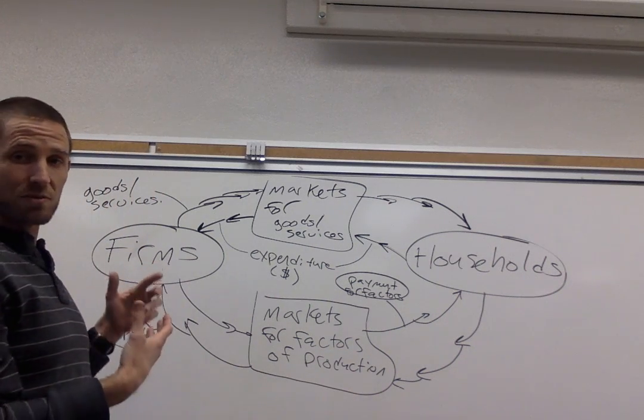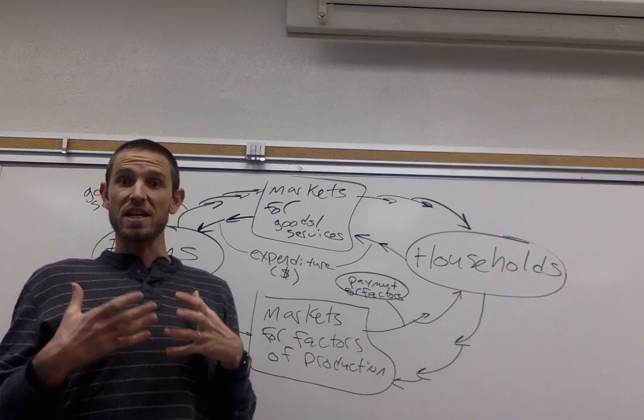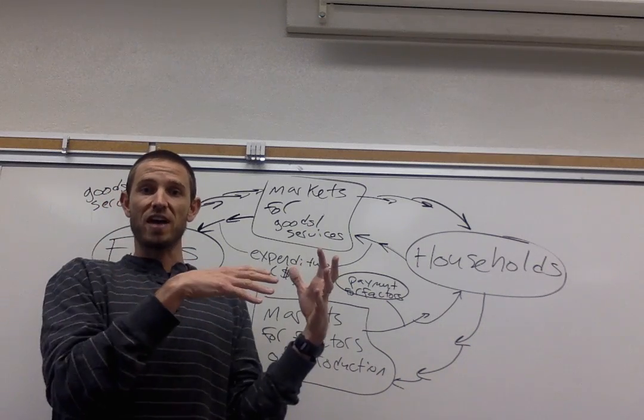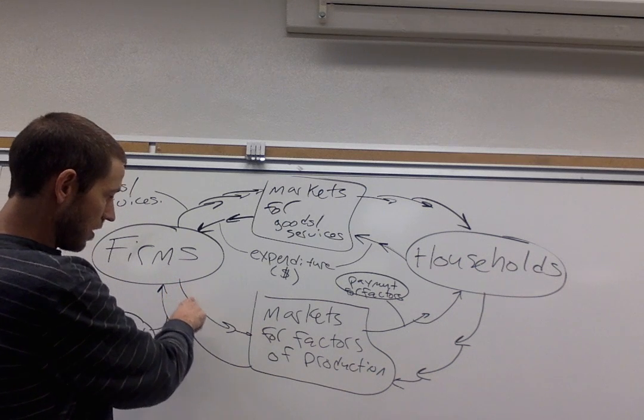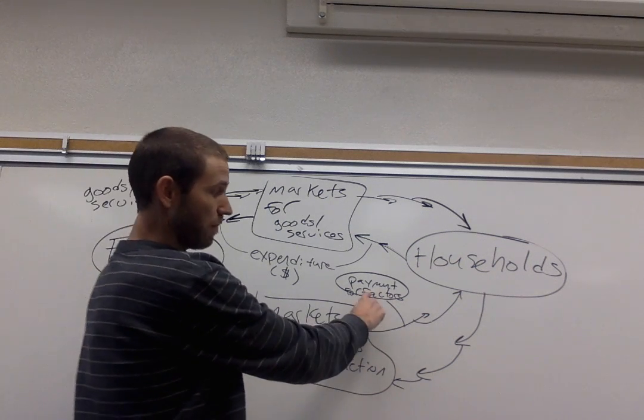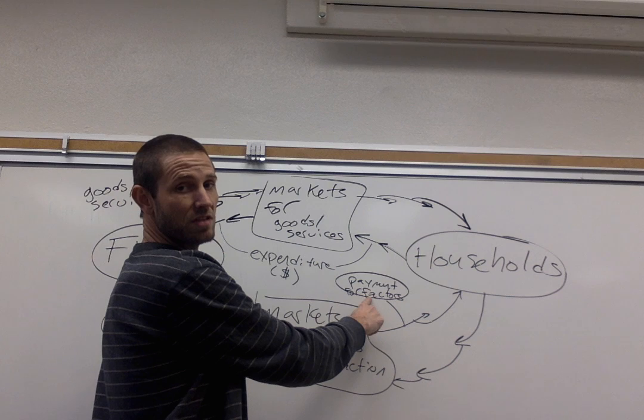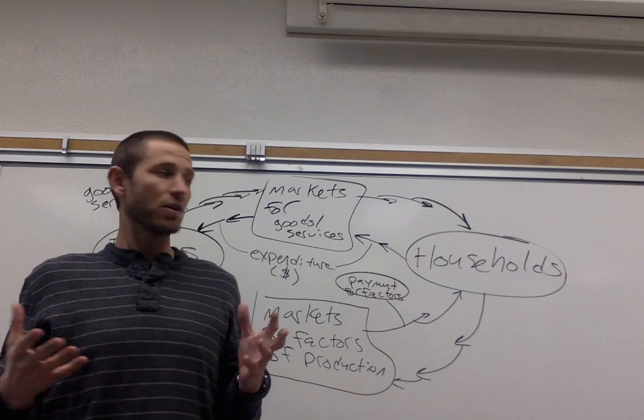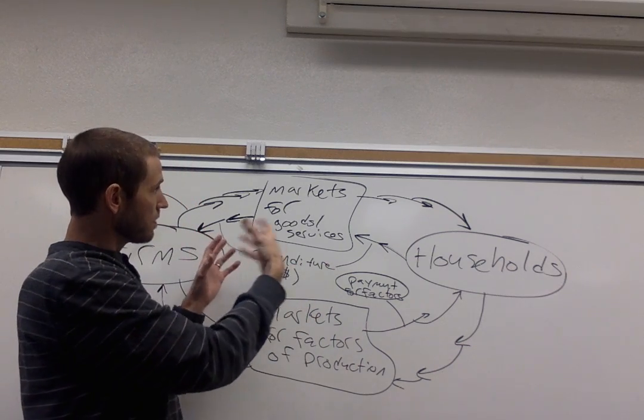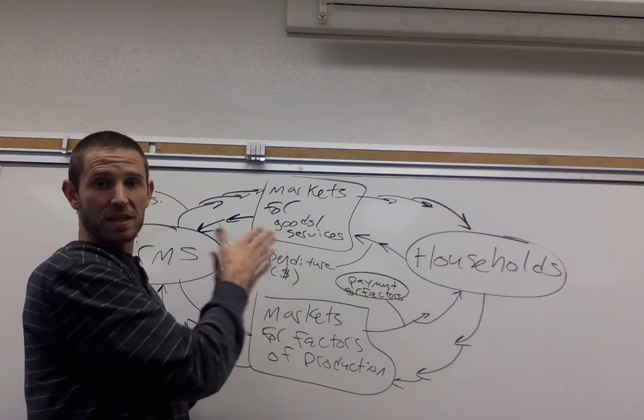As we're selling these resources to firms, we're going to see compensation coming back, money coming from firms towards households through these factor markets. This arrow right here is going to represent all the payment that households receive in exchange for those factors of production. A really common test question that you'll likely encounter is based on labeling these particular exchanges.